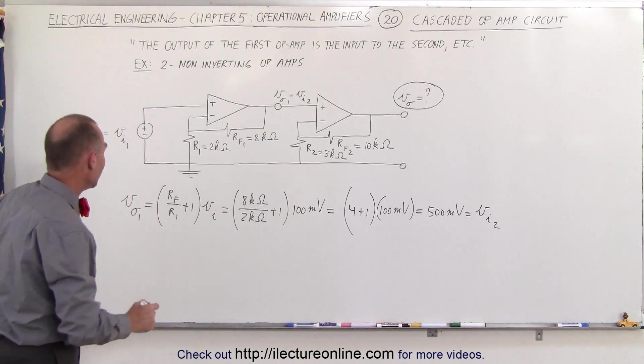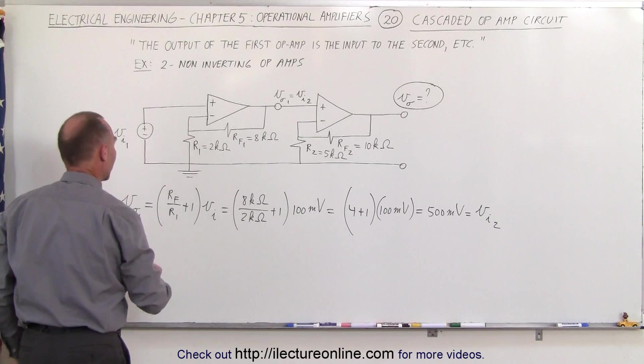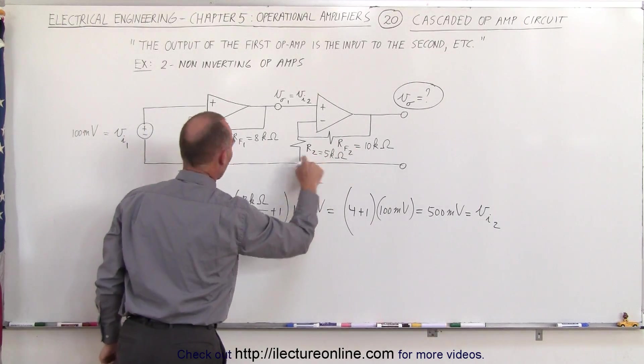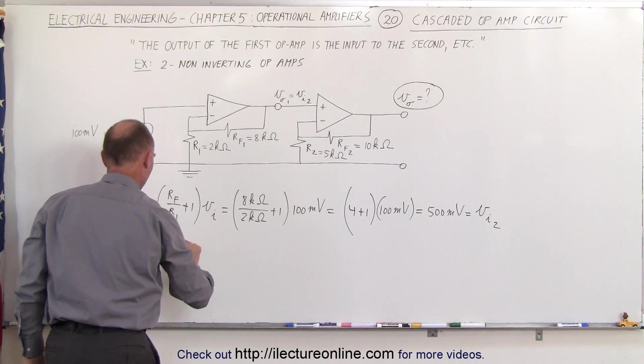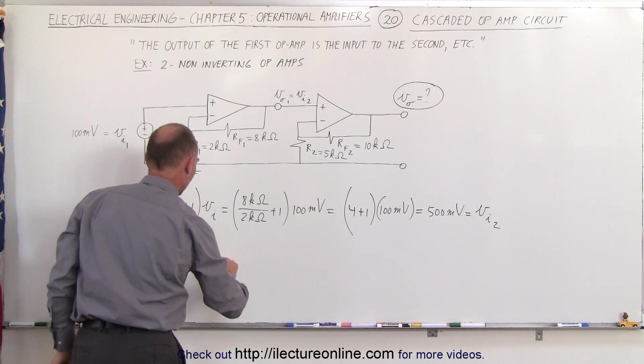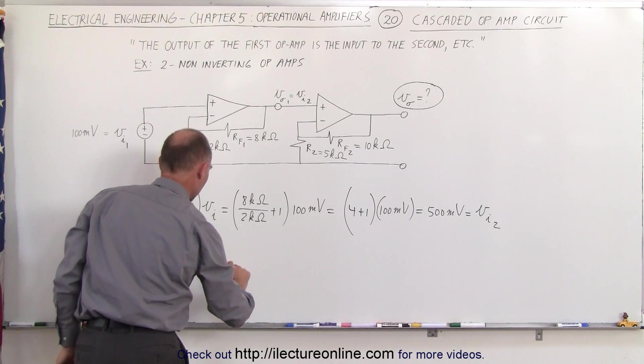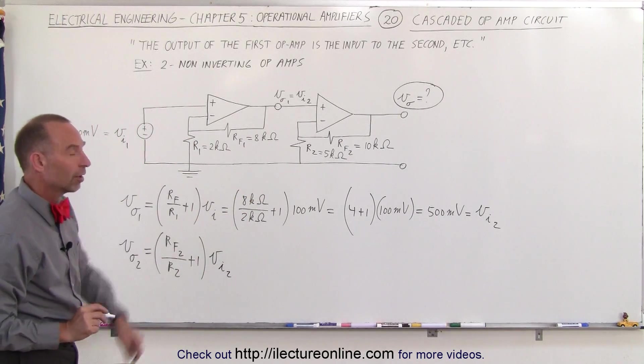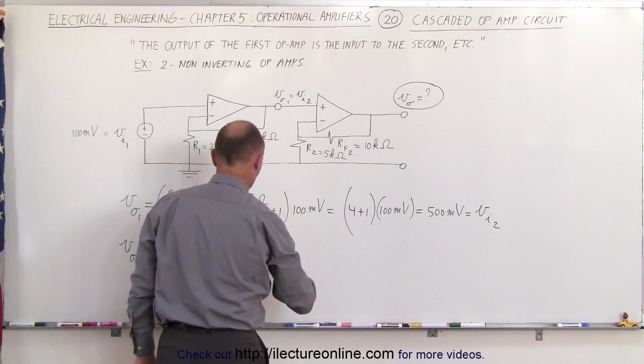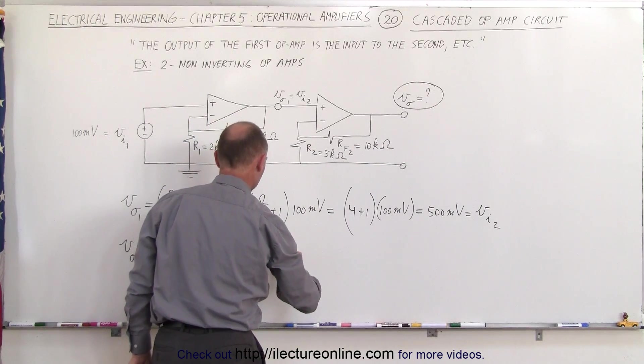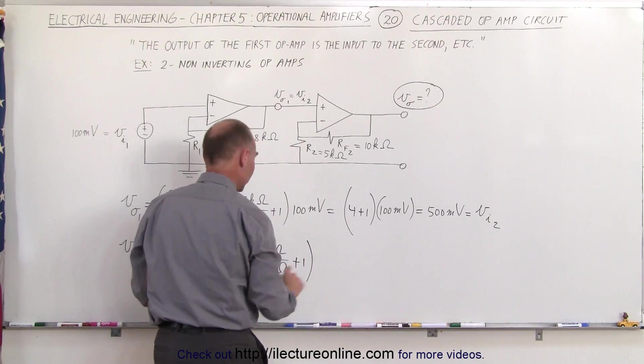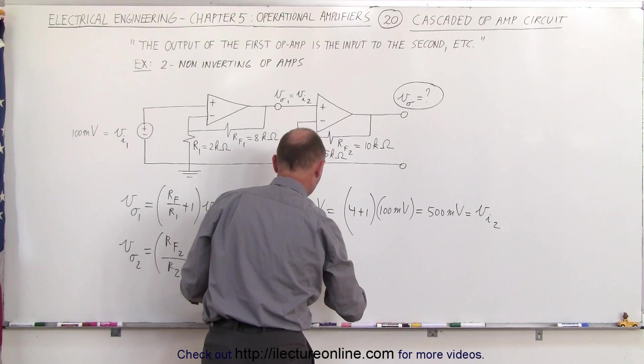Now we do it one more time. We can say that V output of the second operational amplifier is equal to RF2 divided by R2 plus 1 times the input, which is V input of the second op-amp, which is the result of the first op-amp. This is equal to 10 kilo-ohms divided by 5 kilo-ohms plus 1 times the output of the first one, which is 500 millivolts.